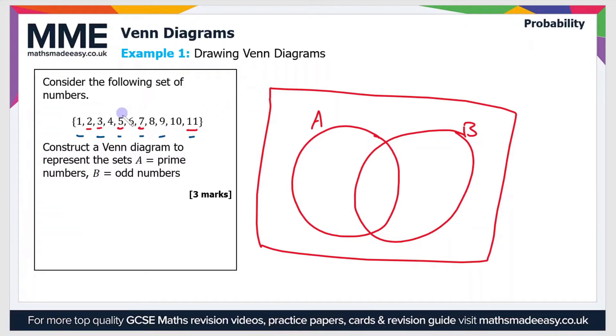So if you look, there are some that have an underline in both red and blue. So these are going to go into the intersection. So that is 3, 5, 7 and 11.